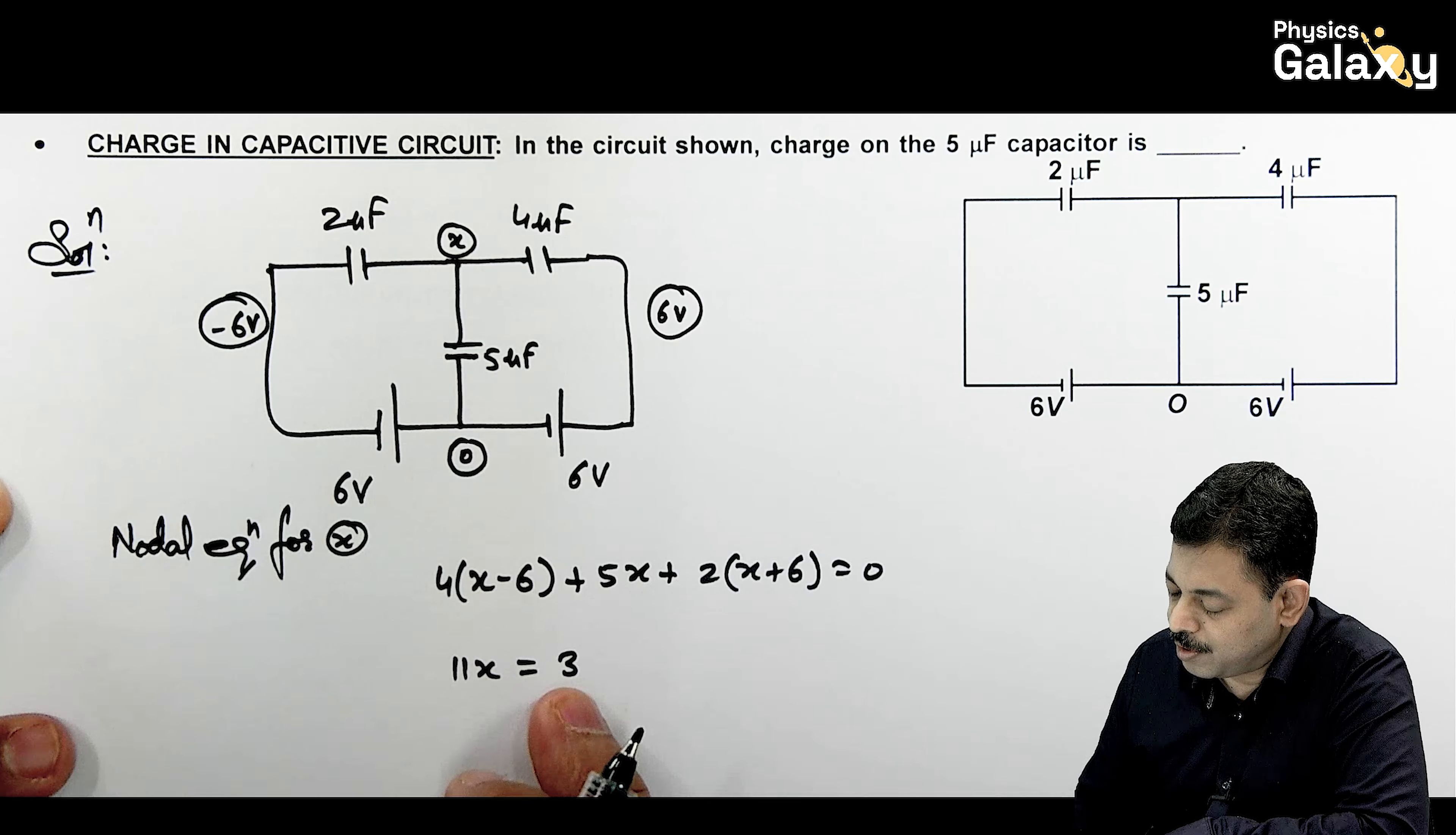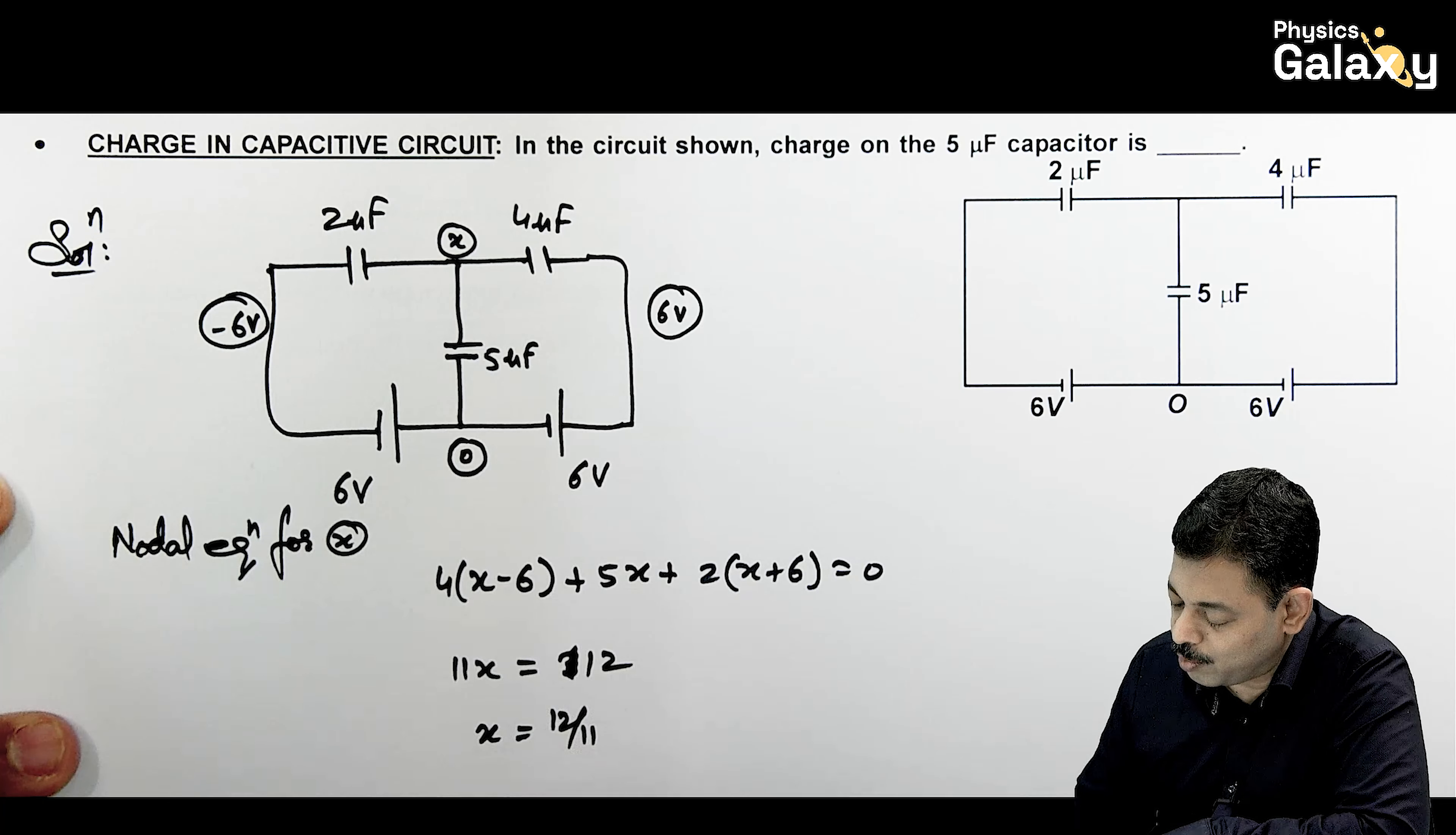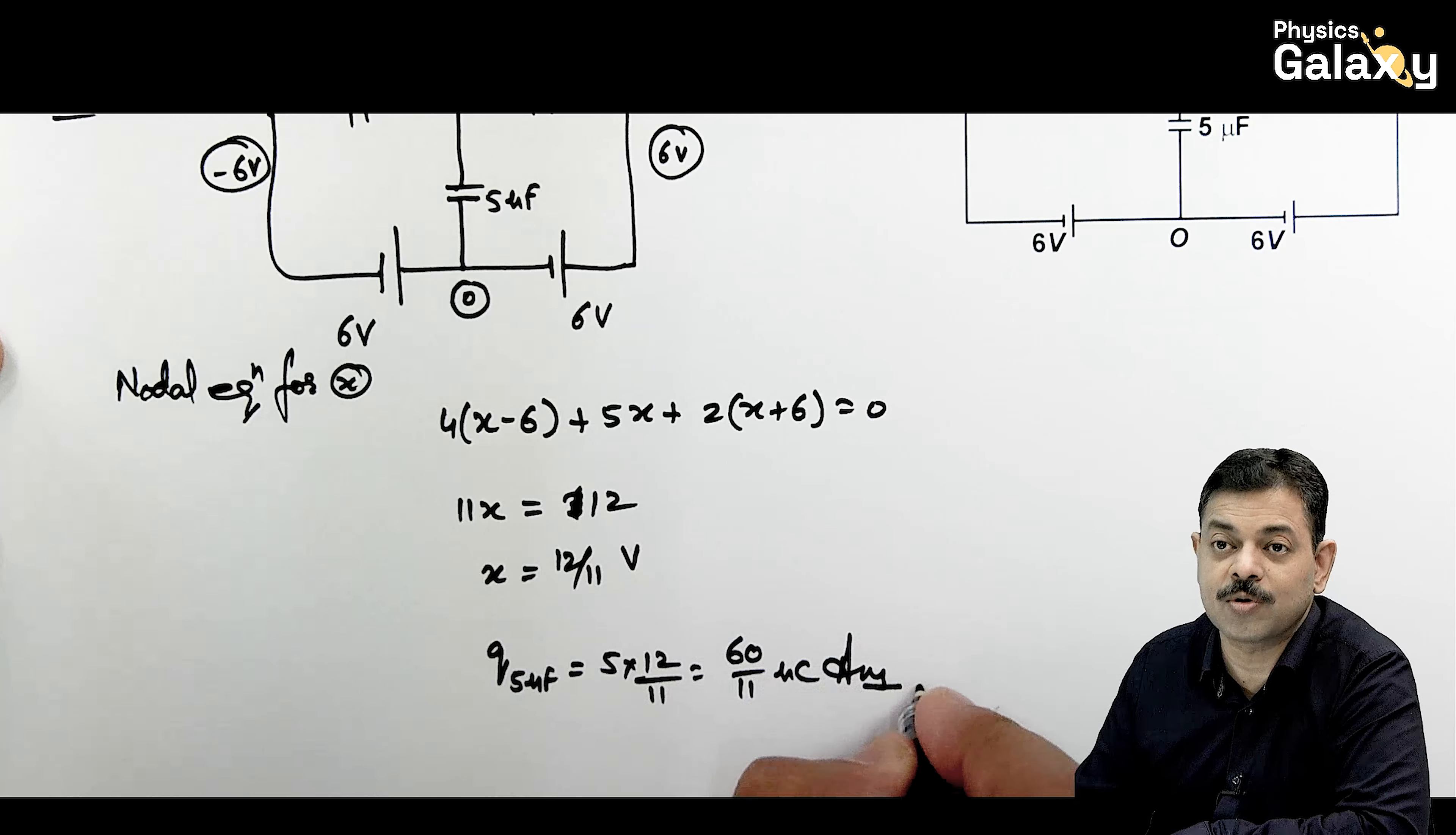This will be 20 minus 24 plus 12. So this comes out to be 12. So the value of X we are getting is 12 by 11 volt. So charge on 5 microfarad capacitor can be given as directly 5 multiplied by 12 by 11. This is 60 by 11 microcoulomb. That is the answer to this question.